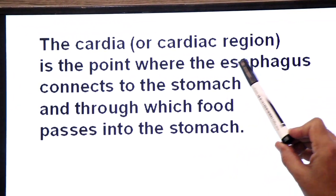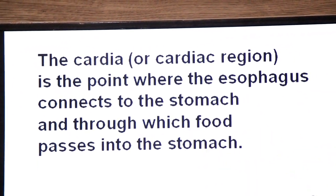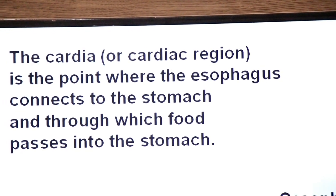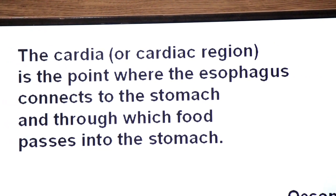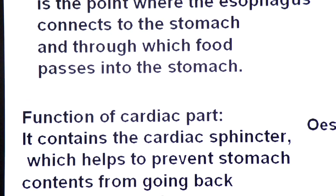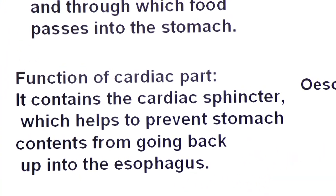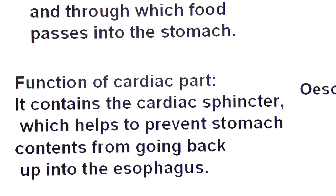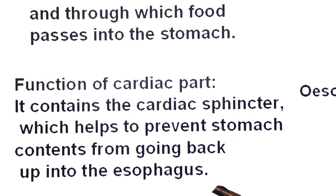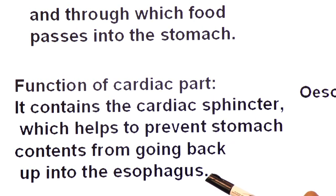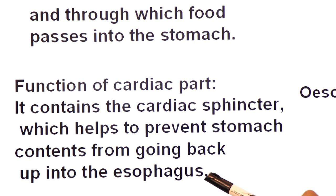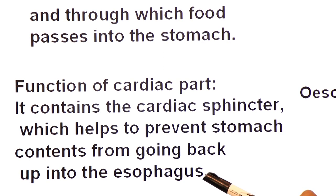The cardia or cardiac region is the point where the esophagus connects to the stomach and through which food passes into the stomach. This part contains the cardiac sphincter, which helps prevent the stomach contents from going back into the esophagus. Jab food ki partial digestion hoti hai stomach mein, toh cardiac sphincter partially digested food ko waapas esophagus mein jane nahi deta.